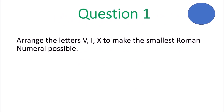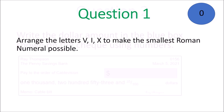Question 1. Arrange the letters V, I, X to make the smallest Roman numeral possible. The timer is set and off and running. Work fast, you don't have much time, grade 6. Let's see if you can get this one done — Roman numerals, make the smallest Roman numeral possible.